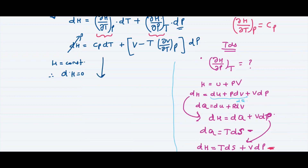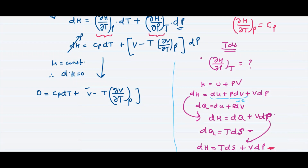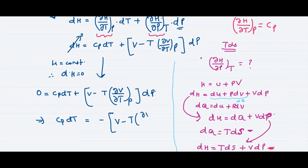This becomes: 0 equals Cp dT plus [V minus T times (∂V/∂T) at constant pressure] times dP. Rearranging, we get minus Cp dT equal to minus [V minus T (∂V/∂T)_P] dP.